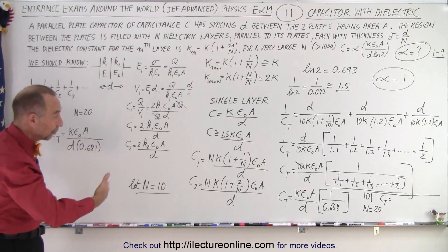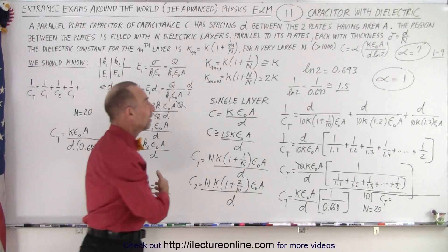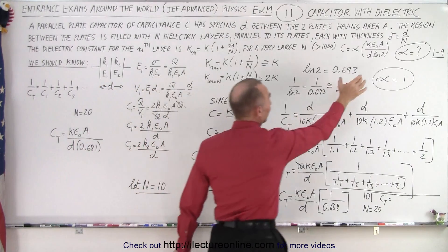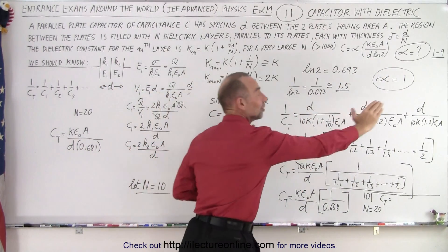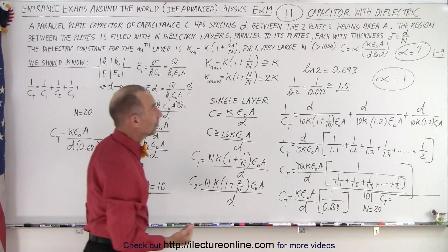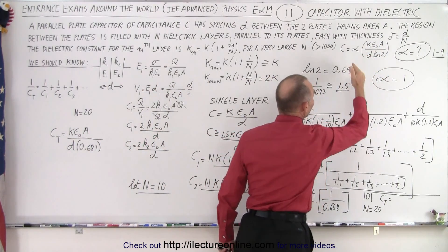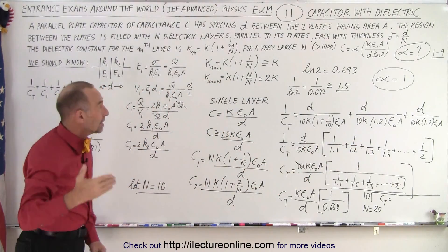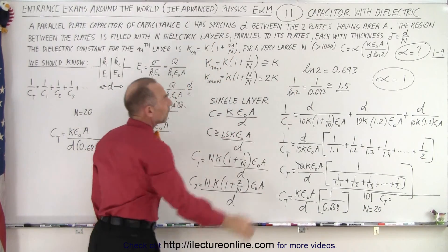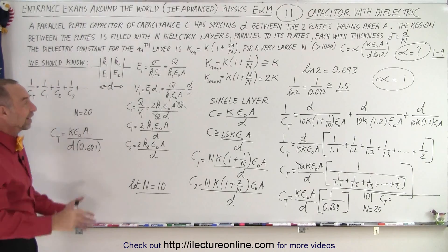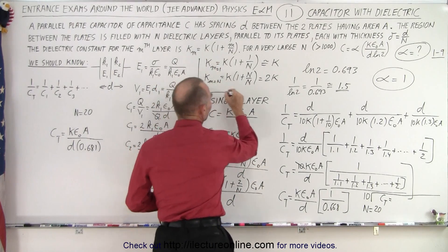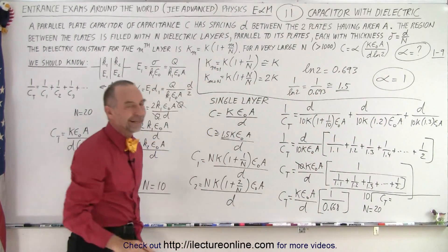As N increases to 30, 40, 50, 100, 1000, you would find the denominator converges to the natural log of 2. So this is the natural result when you have an infinite number of layers with the dielectric constant varying from K to 2K. For N over 1000 you get very close to that number, confirming alpha equals 1.